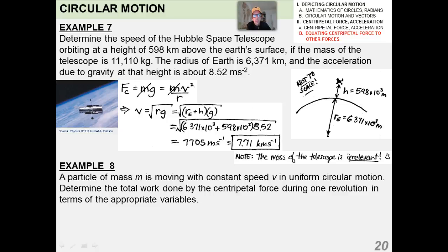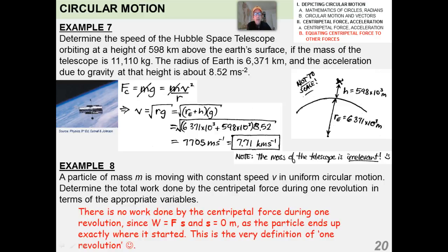Try this: a particle of mass m moving with constant speed in a circle — determine the total work done. This one's straightforward: there is no work done because the force vector and displacement vector are always perpendicular to one another.